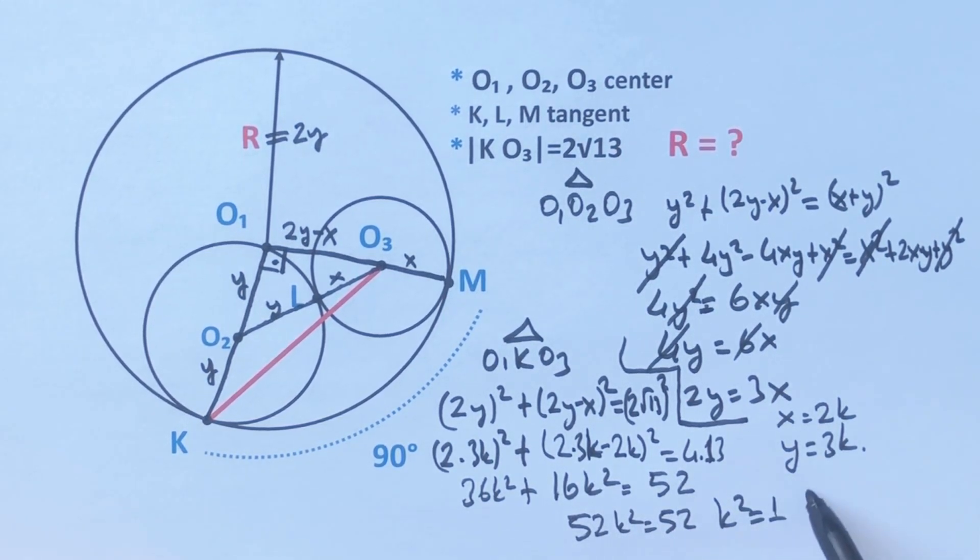k² equals 1, that means k equals 1 or minus 1. We know that k can't be negative, so k equals 1 unit. Therefore y equals 3 units.